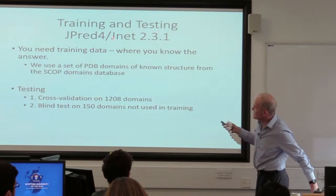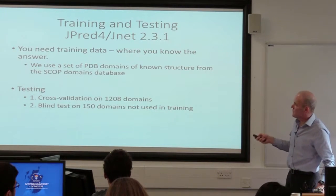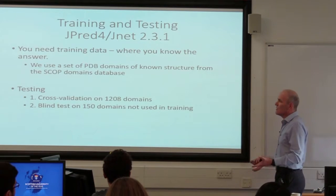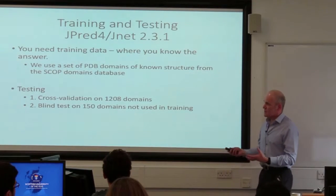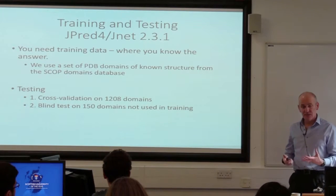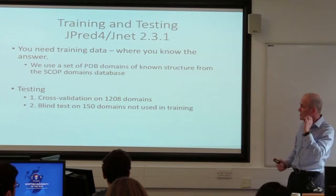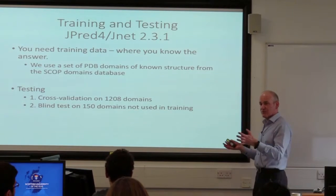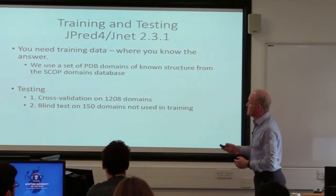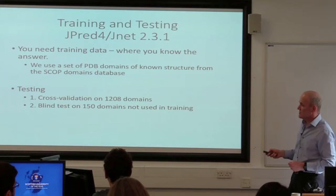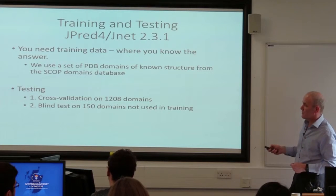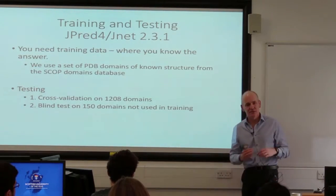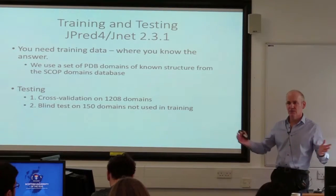For J-Net, you need training data where you know the answer for secondary structure. We use the Protein Data Bank and take a subset based on the SCOP-E domains database — a set of domains where we know the three-dimensional structure. We build multiple alignments from those domains and know the secondary structure of every residue in each domain. We train on 1,208 domains that are distinct in structure, not sequence-similar to each other, so they're diverse across the whole of what's currently known about protein folds.